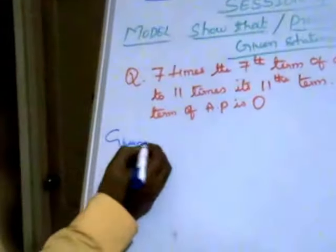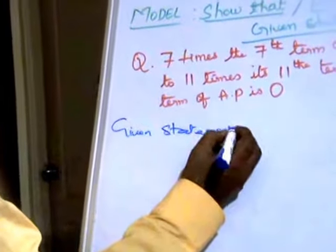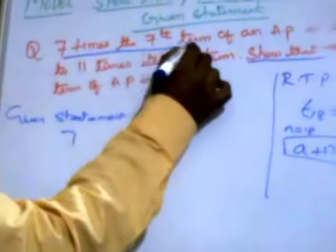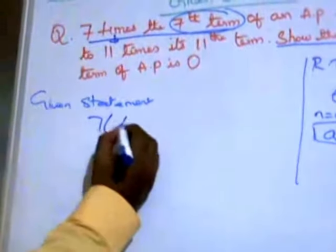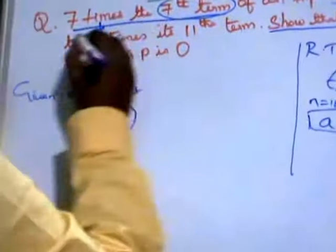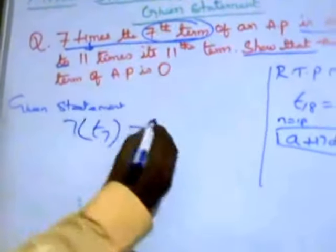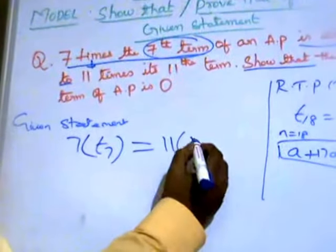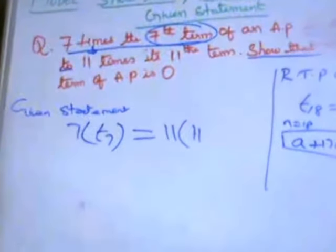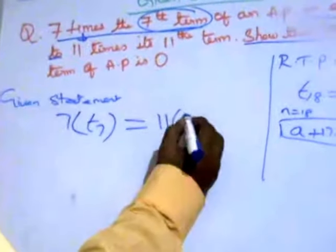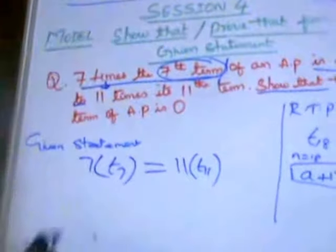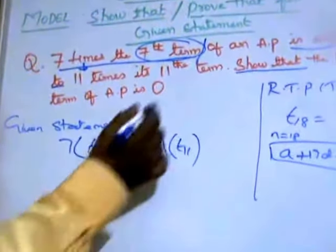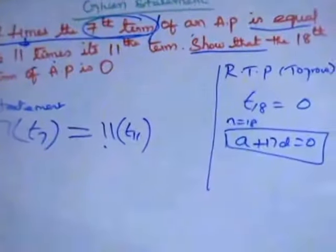Given statement: it says 7 times the 7th term — times means bracket — so 7 into T7 of an AP is equal to 11 times the 11th term, which you write as 11 into T11. So the given statement says 7 times T7 equals 11 times T11.